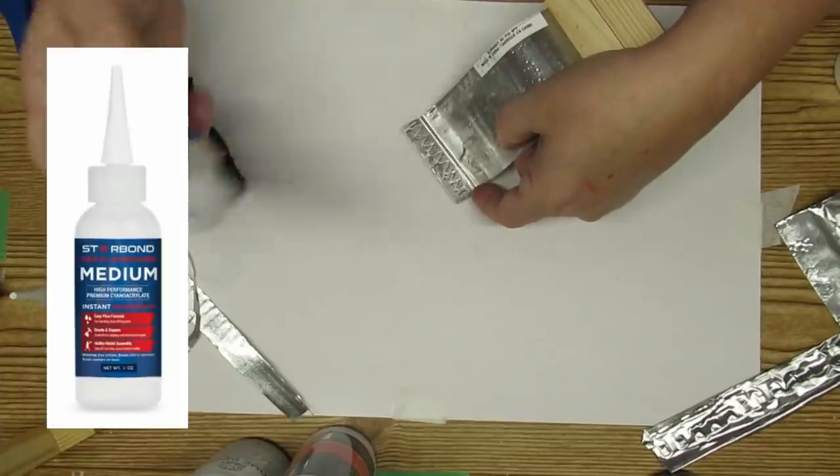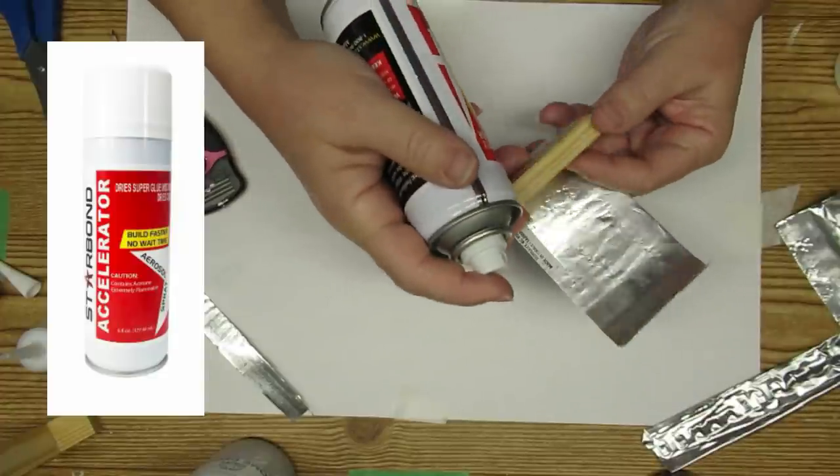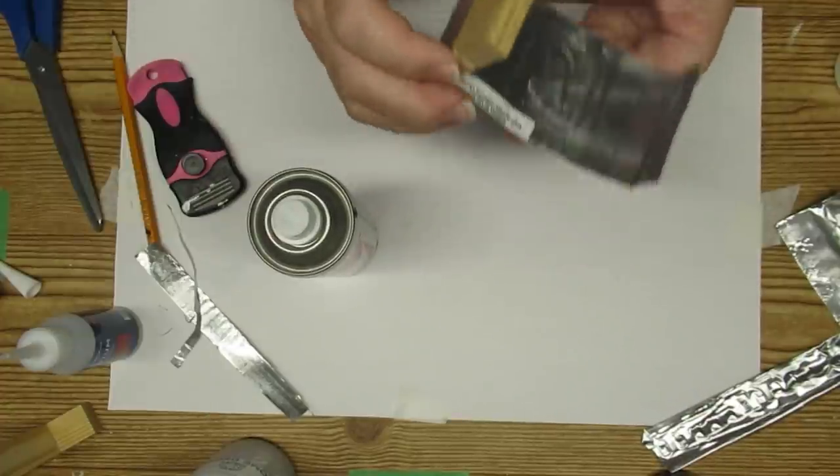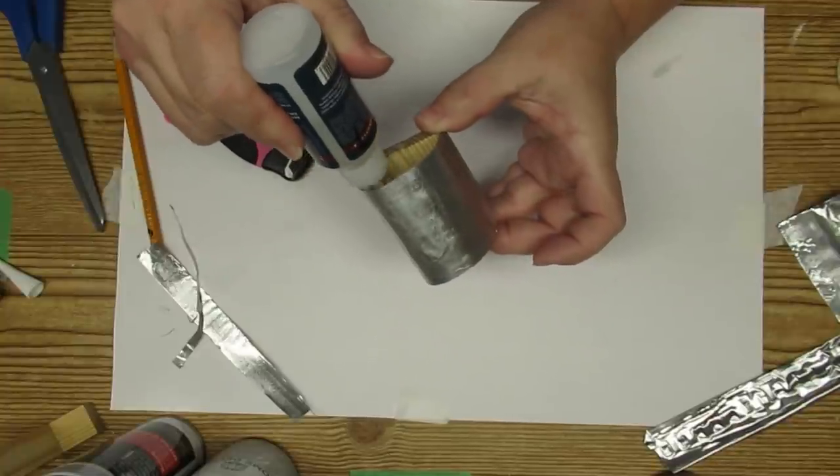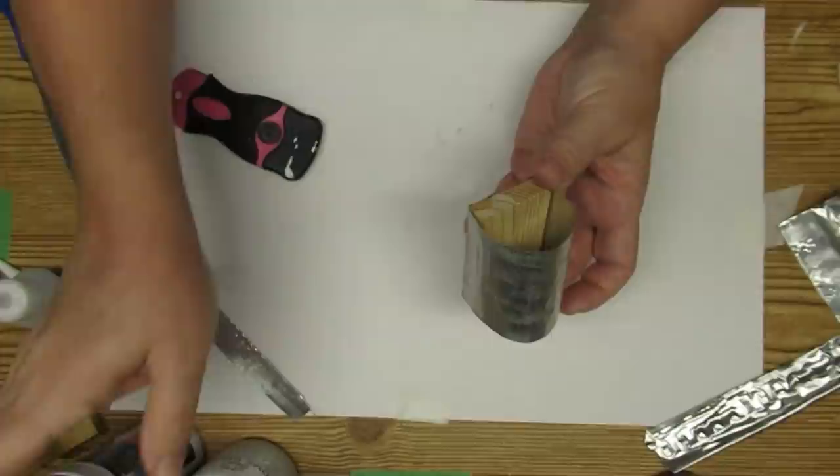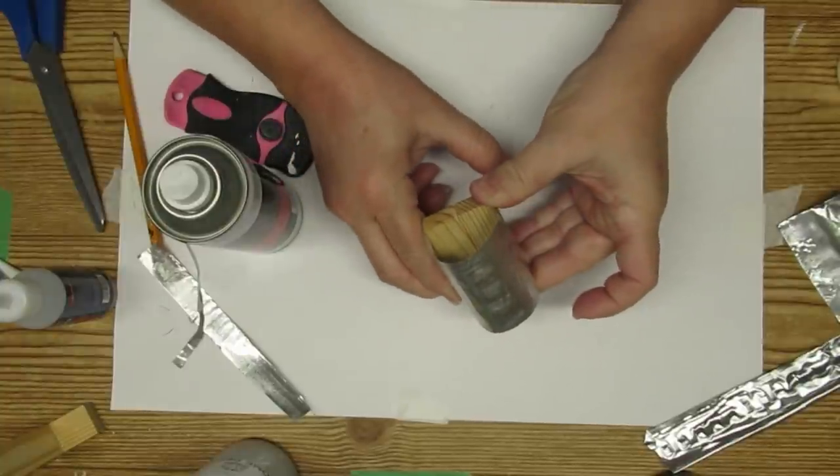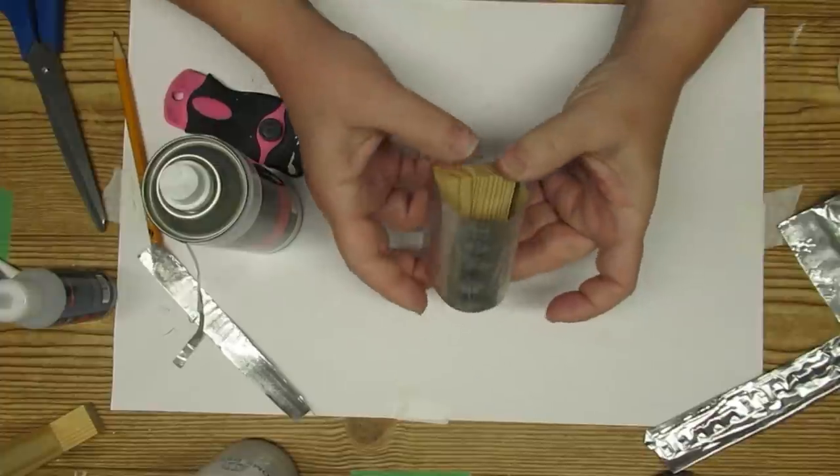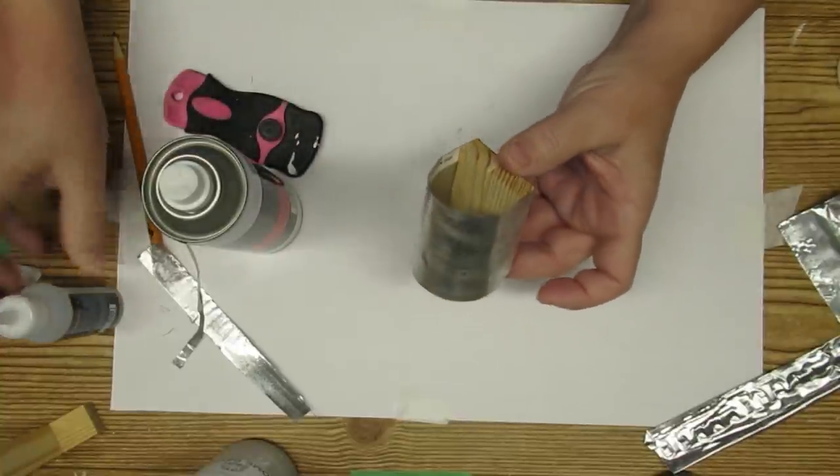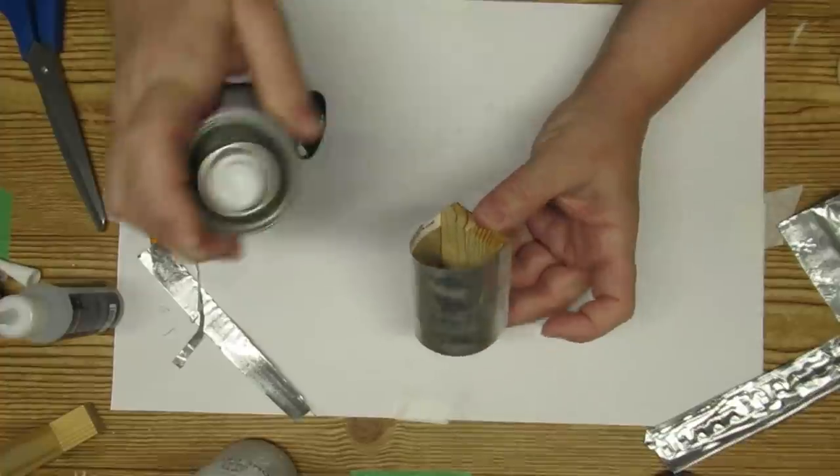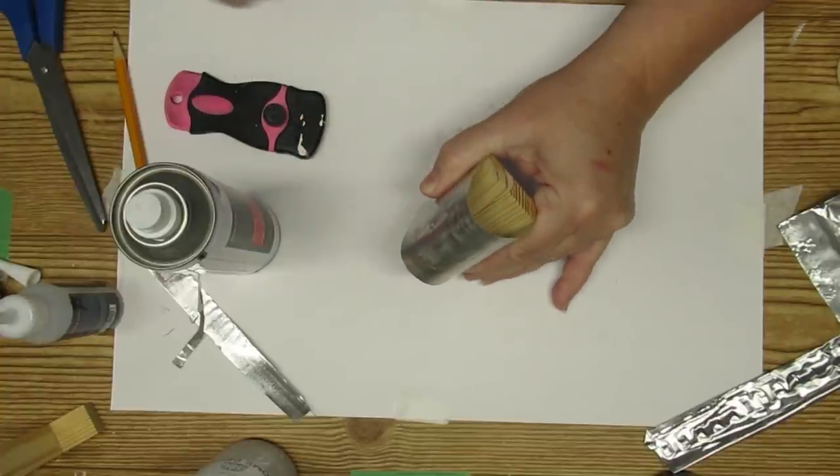I'm using Starbond medium thickness CA glue which is a type of super glue. I'm also using the accelerator which will make the glue harden on contact. Starbond glues are perfect for when you're doing small items like this when you don't want any of the glue to show or if you're gluing different mediums together. What I really love about it is the accelerator. You put the glue on one of the pieces and then you spray the accelerator and it turns into an instant hold and it's so strong. I've also used this glue to create tiered trays and they turn out so strong. I will have a link down in my description box. If you use the code which is also in the description box you'll get 10% off your first order.